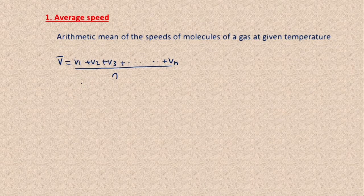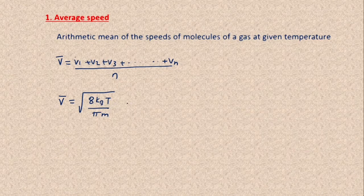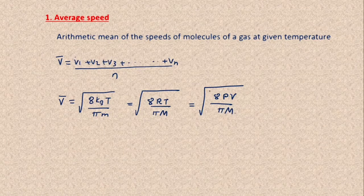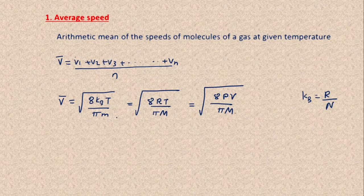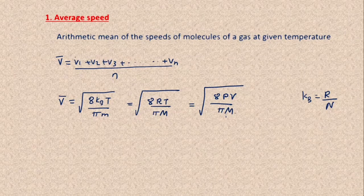Using Maxwell's speed distribution, we can write average speed as the square root of 8K_BT divided by (π × m). It can also be written as the square root of 8RT divided by (π × M), and further as the square root of 8PV divided by (π × M). Here, small m stands for the mass of a single molecule, while capital M stands for the molecular mass of the gas. This is the relation to calculate average speed.